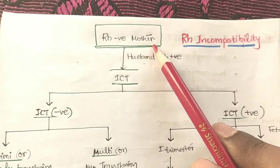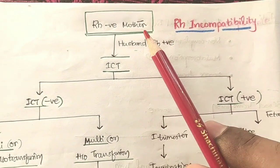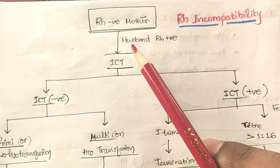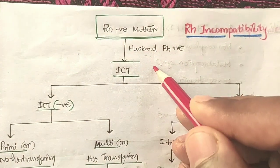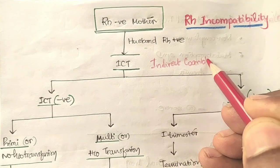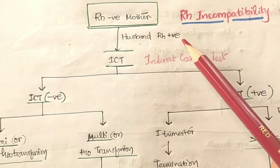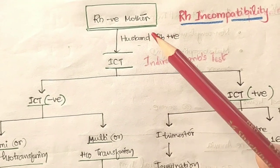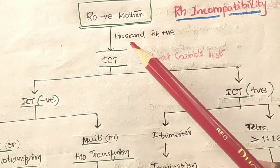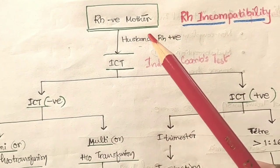When an RH negative mother is identified, we check the husband's RH status. If the husband is also RH negative, there is no problem — the child will also be RH negative. The problem arises only when the husband is RH positive, which creates the risk of RH incompatibility in the baby.